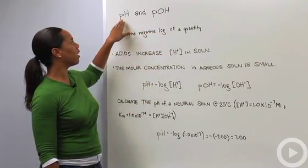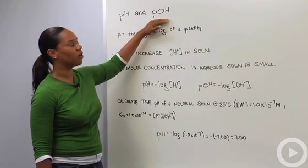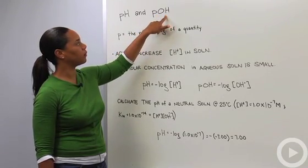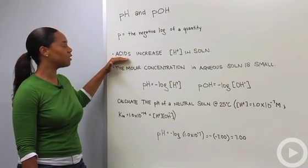So here we're saying pH is equal to the negative log of hydrogen ion concentration. And here with pOH, p is the negative log of the hydroxide ion concentration.